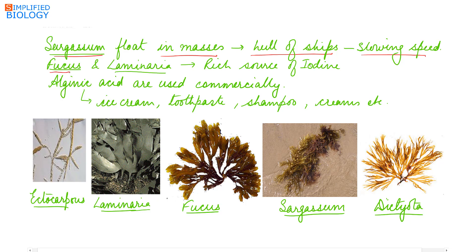Fucus and Laminaria are a rich source of iodine, while alginic acid is used commercially in ice cream, toothpaste, shampoo, creams, etc. Examples of brown algae are Ectocarpus, Laminaria, Fucus, Sargassum, and Dictyota.